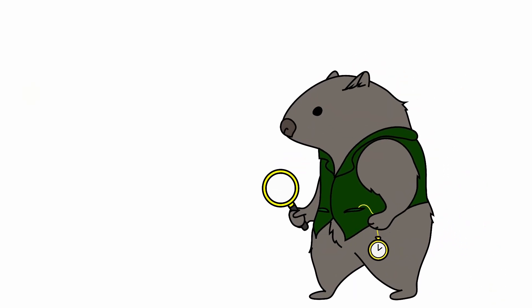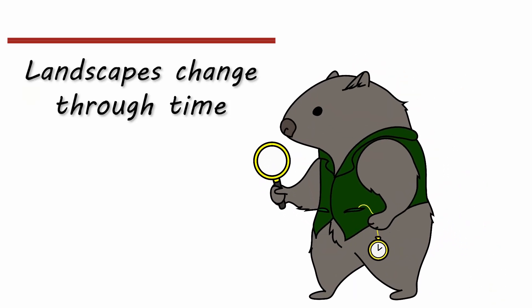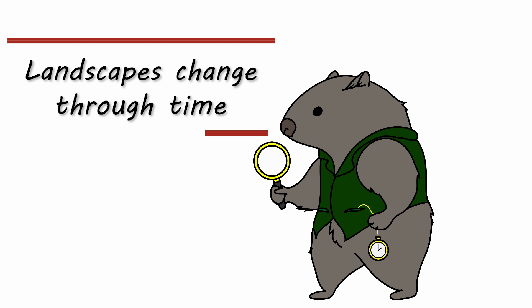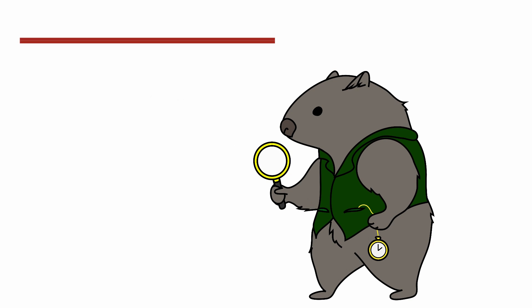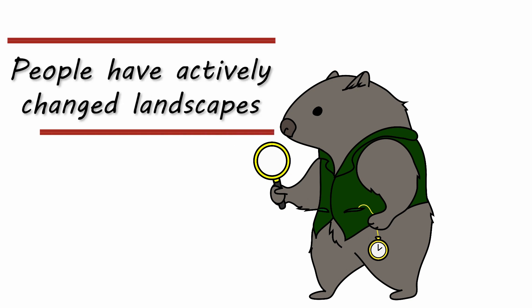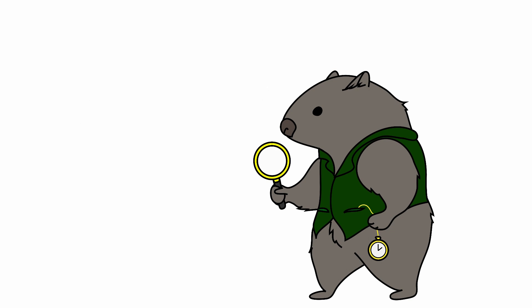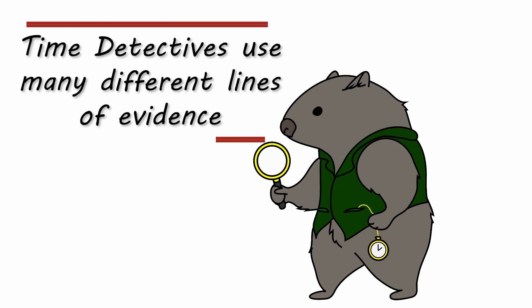Evidence from around Australia tells us that landscapes have changed through time and that people have actively contributed to shaping these landscapes. As time detectives, we need to use many different lines of evidence to tell the story of how country has changed over time.